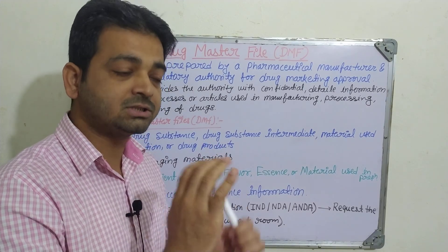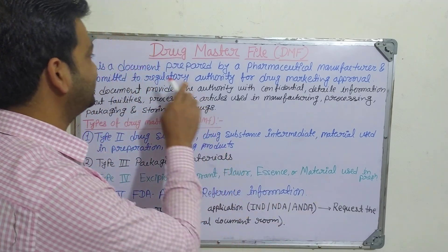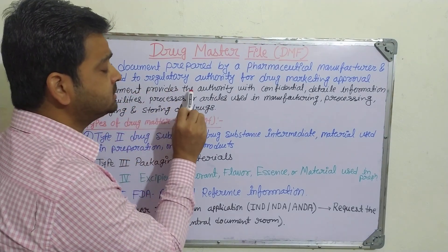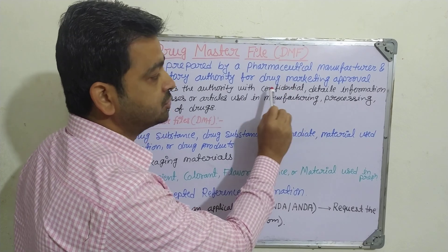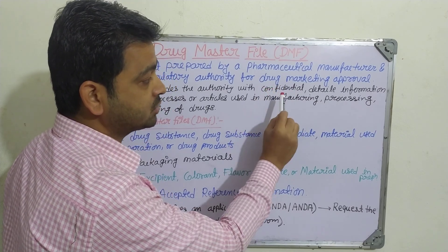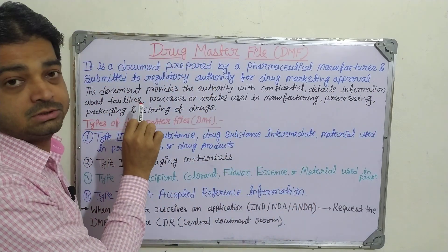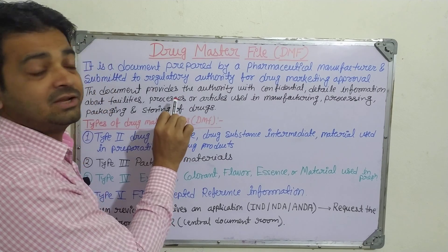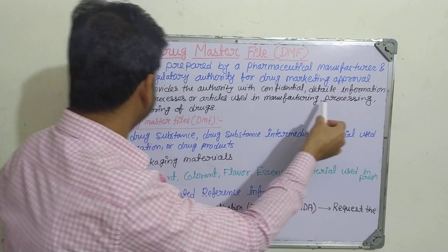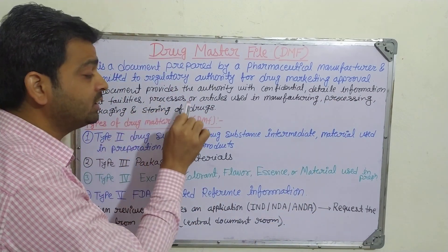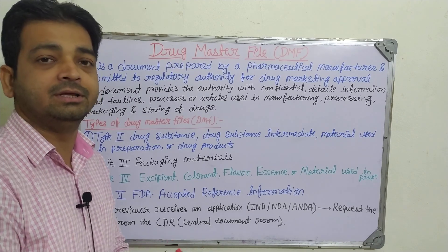The DMF document is confidential — it is prepared and submitted but not revealed publicly, as it is under the approval process. It provides the regulatory authority with detailed information about facilities used, processes involved, and articles used in manufacturing, processing, packaging, and storing of that particular drug.